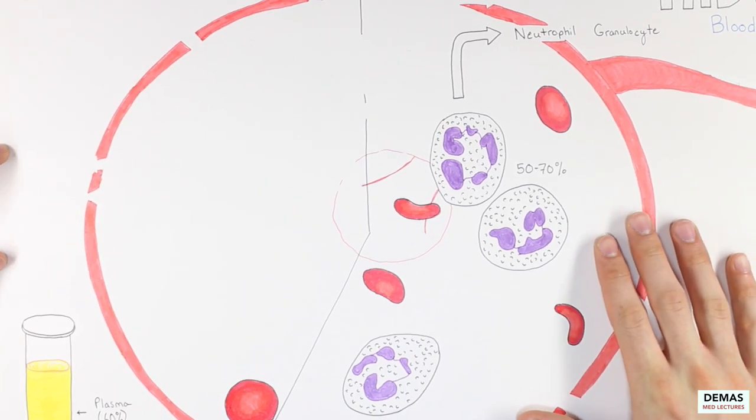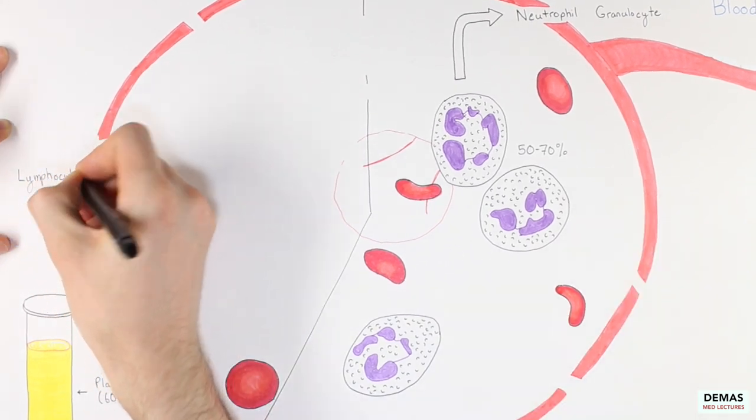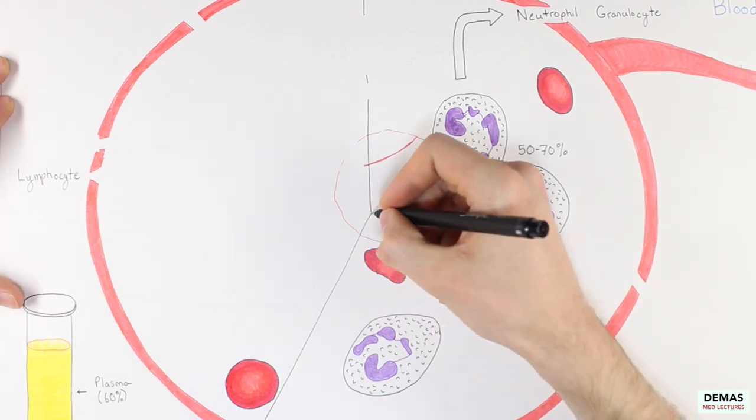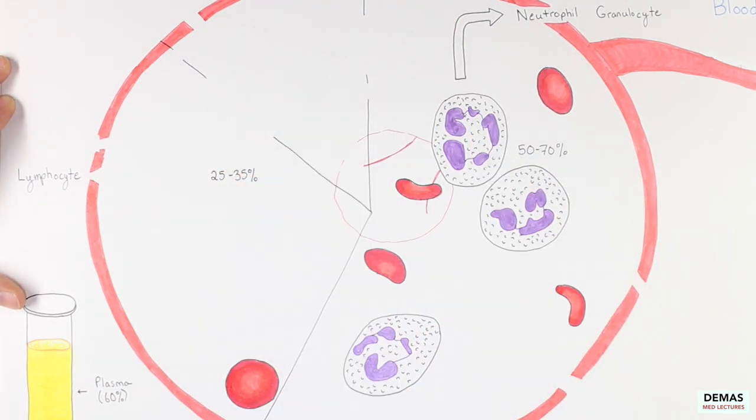Next, I'm going to draw the second most abundant white blood cell known as a lymphocyte. Lymphocytes make up between 25-35% of the white blood cells in normal conditions, and I'll also give them their respective slice of the blood vessel as represented here.